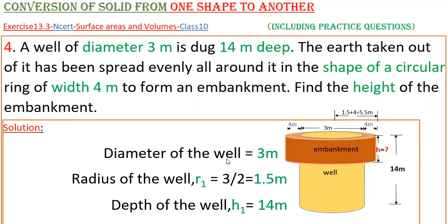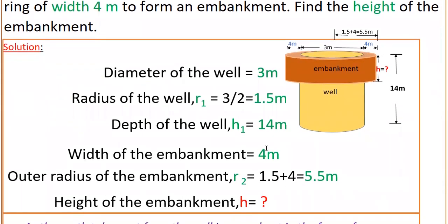Write the given values: diameter of the well is 3 meters, and radius of the well r1 is equal to diameter by 2, that is 3 by 2, equal to 1.5 meters. Depth of the well h1 is equal to 14 meters. Width of the embankment is 4 meters. The outer radius of the embankment r2 is r1 plus width, that is 1.5 plus 4, equal to 5.5 meters.